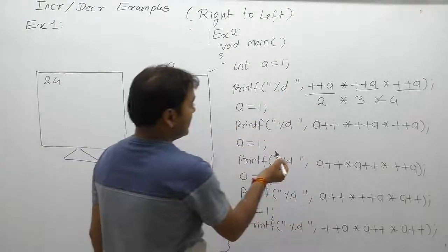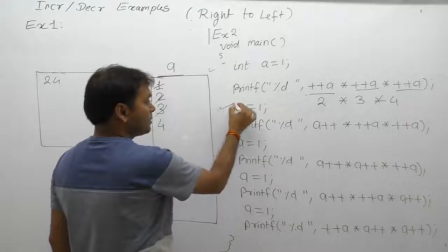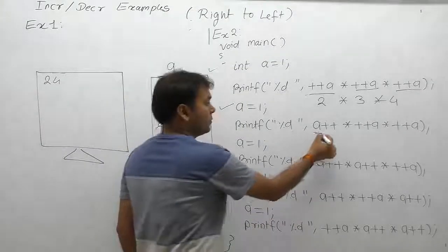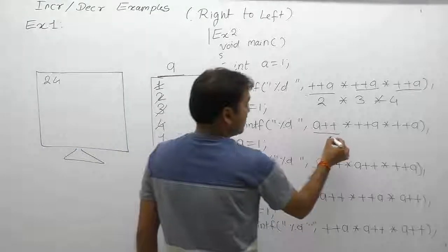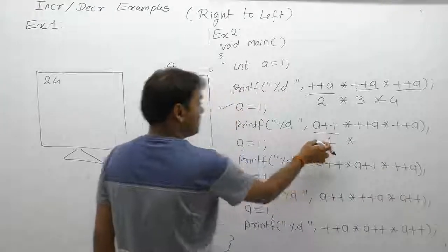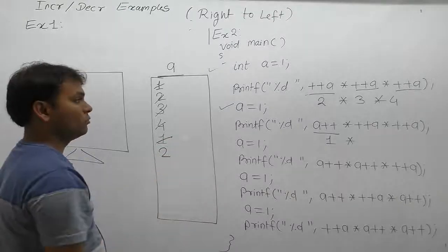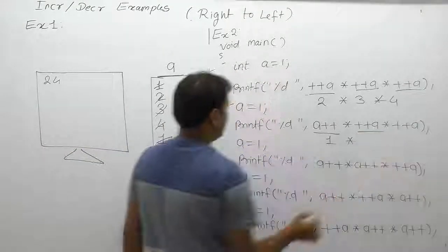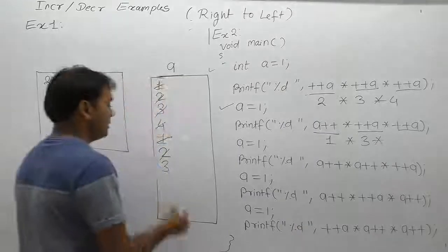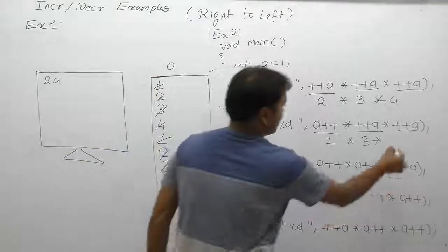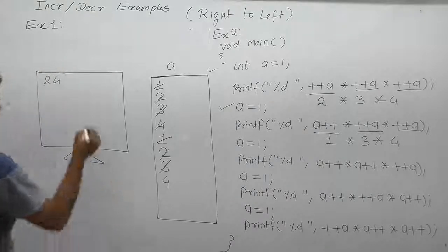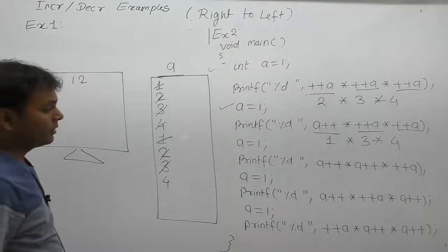Next, the same case again — a is re-initialized by 1. Now, post then pre combinations: post means replacement first then increment, a becomes 2. Then pre-increment — a becomes 4. Pre means increment then replacement. The final result of that expression is 12, so the next printf prints 12.